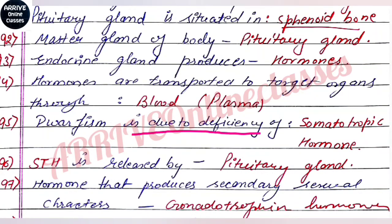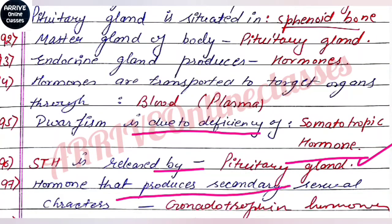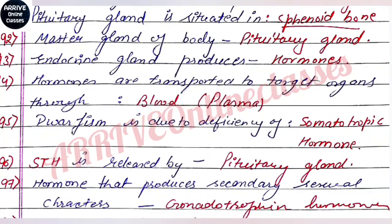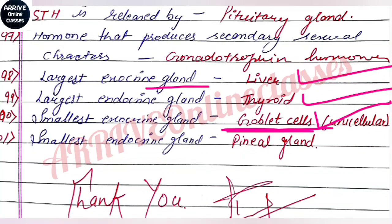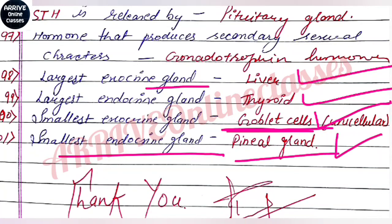Dwarfism is due to the deficiency of somatotropic hormone (STH), which is released by the pituitary gland. Hormones that produce secondary sexual characters are gonadotropin hormones. The largest exocrine gland is the liver, and the smallest exocrine gland is the goblet cell. Goblet cells function is to secrete mucus.